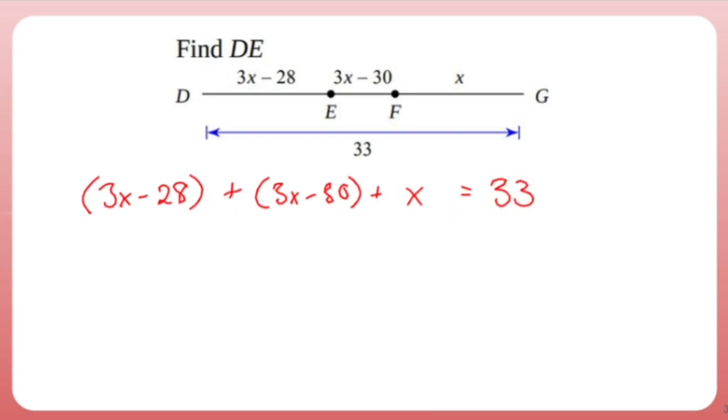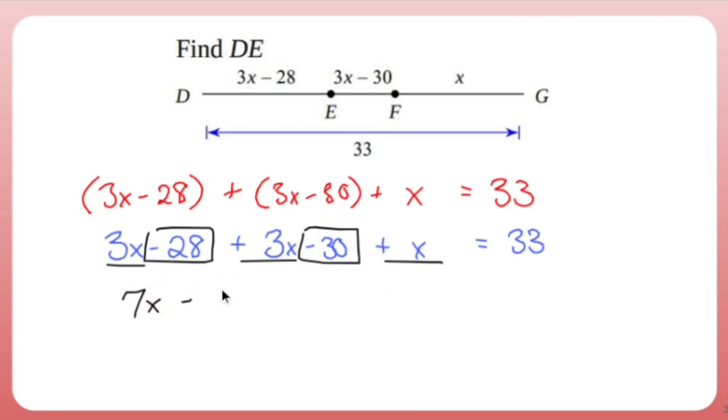If you have nothing in front of a parentheses, you don't need the parentheses. So this leaves me with 3x minus 28 plus again, nothing in front of a parentheses, 3x minus 30 plus X equals 33. Let's combine some like terms. We've got 3x, we've got another 3x, and we've got 1x. So that's 7x. We've got negative 28 and negative 30, which is negative 58. And that equals 33. Now it's just a regular two-step equation. Let's add 58. 7x is going to equal 91. Last step. Since 7 is attached to X, let's detach it by dividing everything by 7. And 91 divided by 7 is 13.